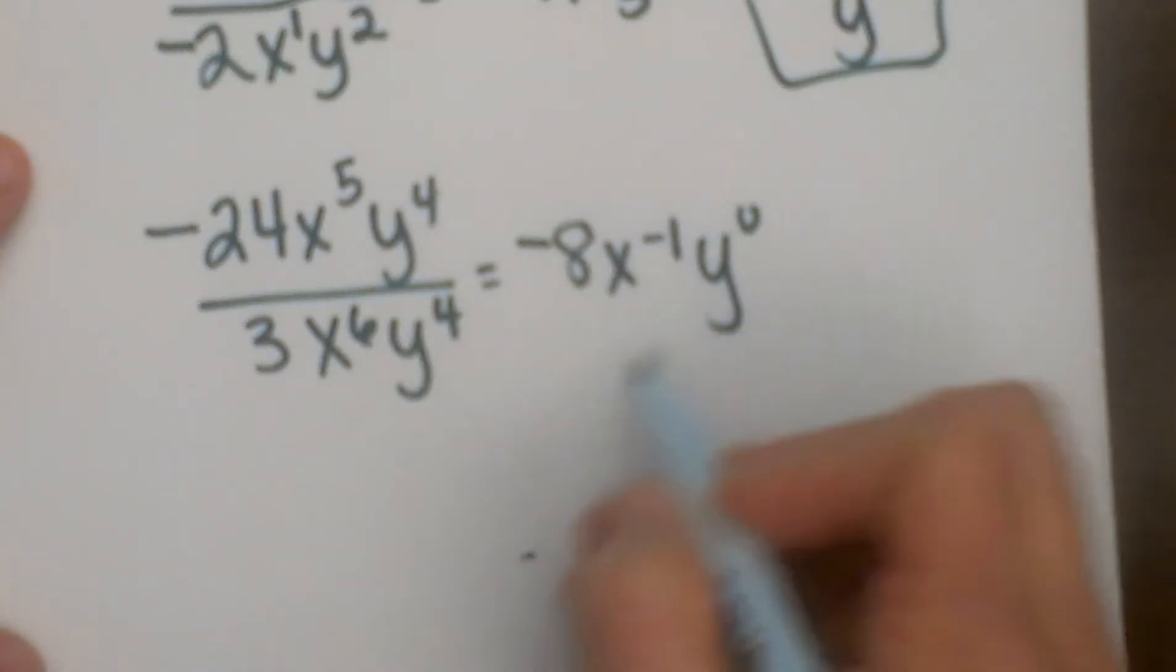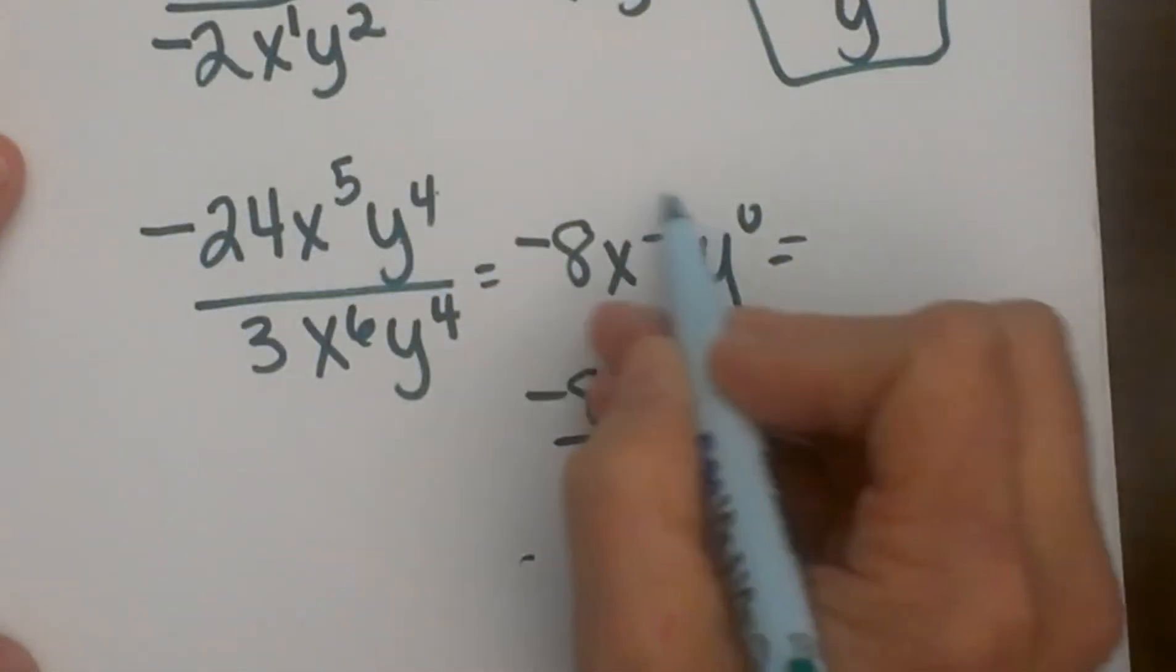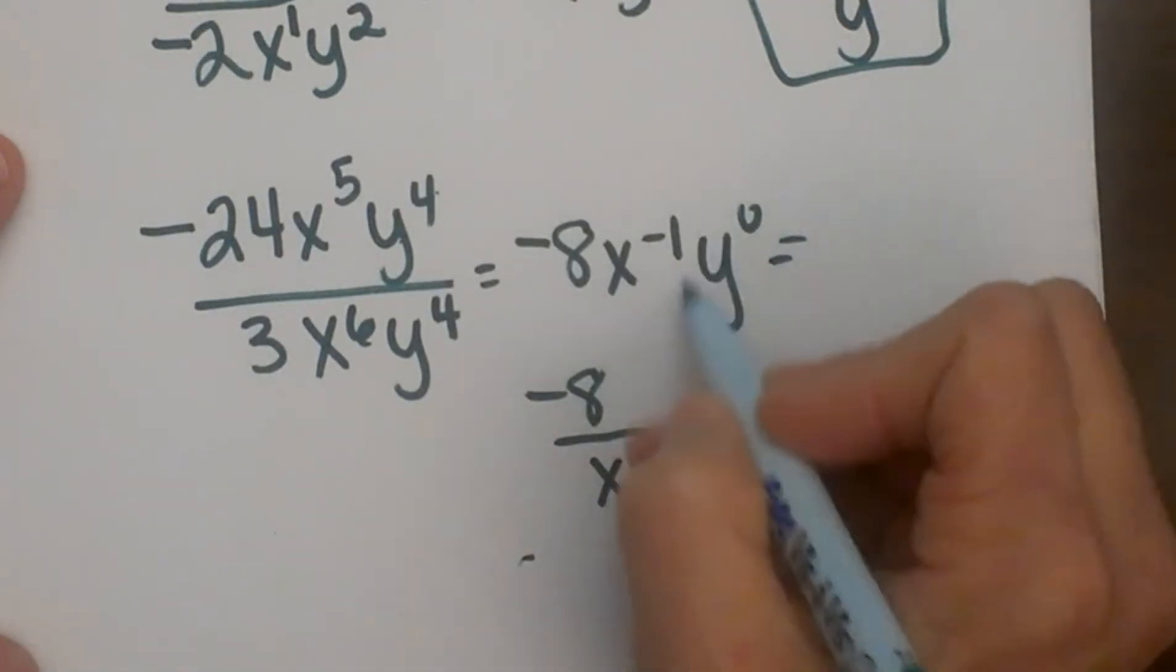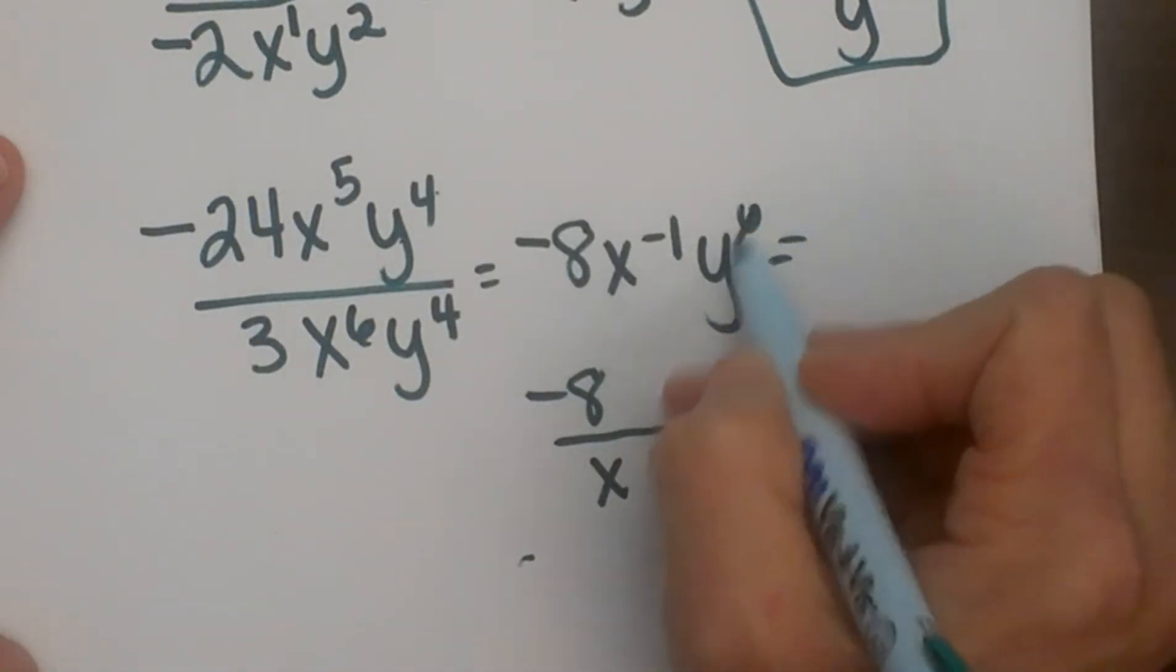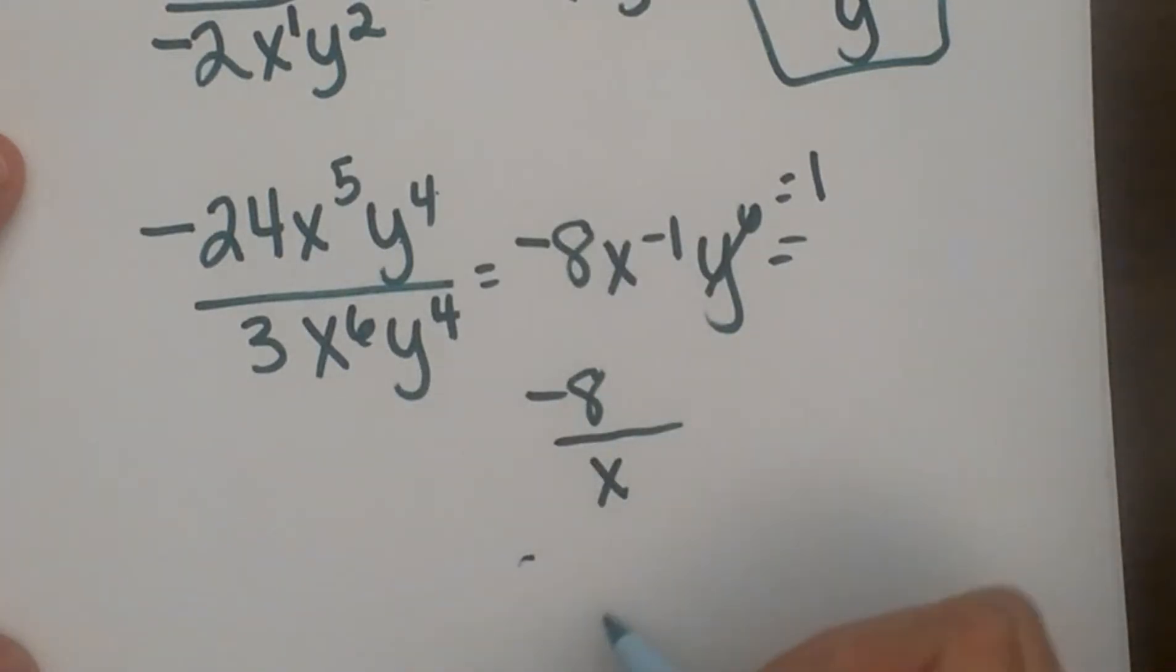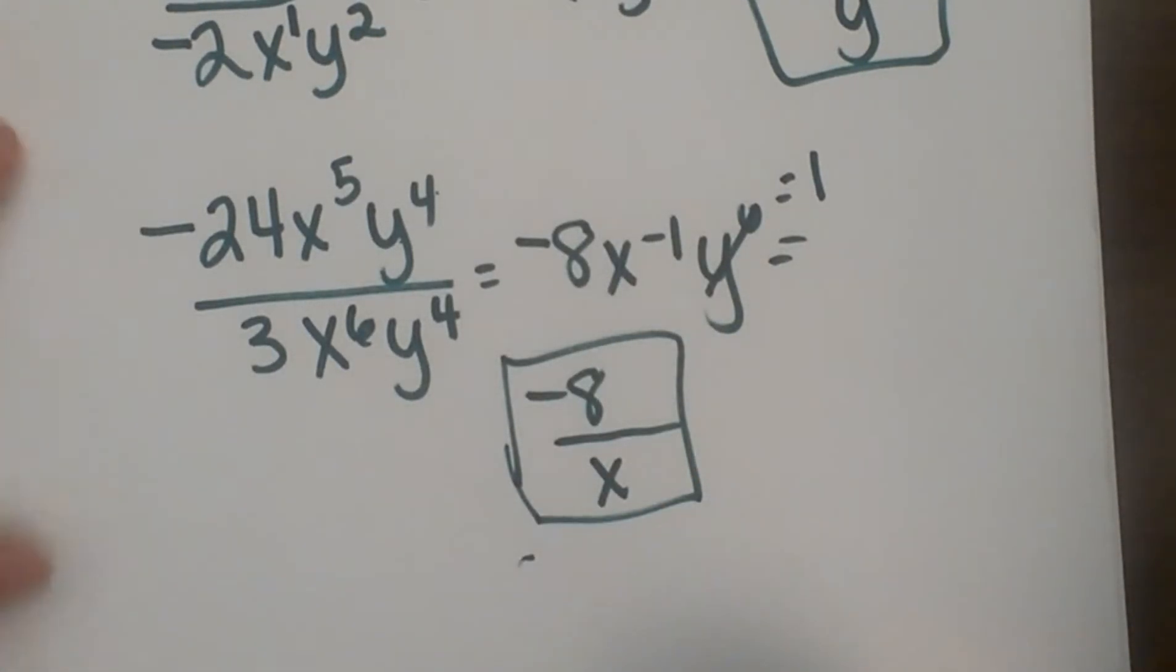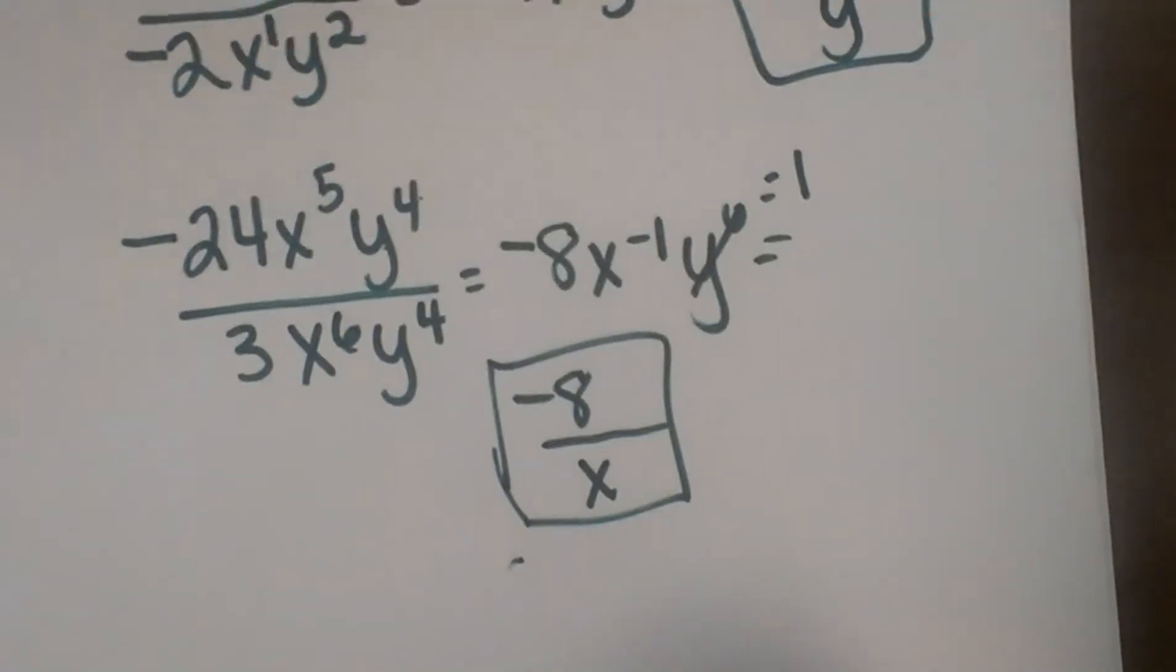That negative 8 just remains a negative 8, but the x to the first we have to change the position. Right now it is on the top, so we move it into the denominator. And y to the zero, any number to the zero power is just 1, so that is insignificant. And our final answer is just negative 8 over x. And that is how you would simplify those.